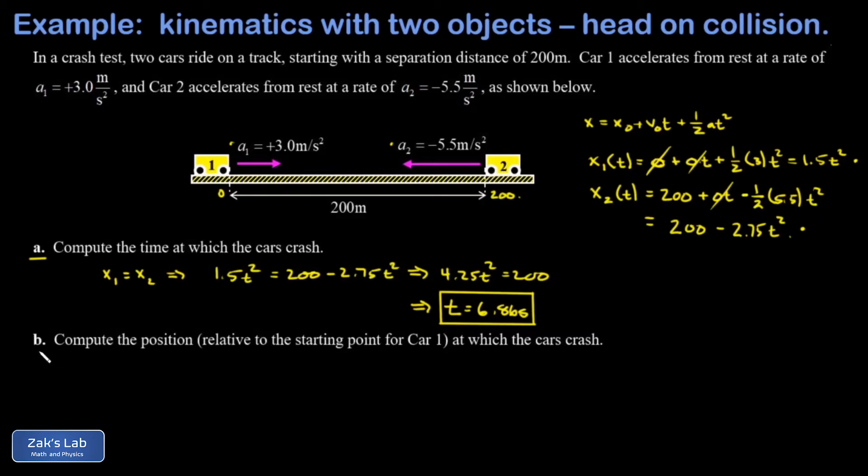Now that I know what time it is when the cars crash, I'm asked in part b to find the position at which they crash - where are they relative to the origin which I put at the front of car one. You have two choices of how to do this, and it's actually best to do it both ways as a check on your work. I can find the position of car one evaluated at t equals 6.86 seconds. I just plug into my position as a function of time, which was 1.5 times the time squared for that car. When I run the numbers on this, I get 70.6 meters.